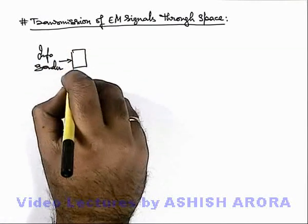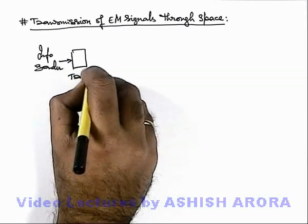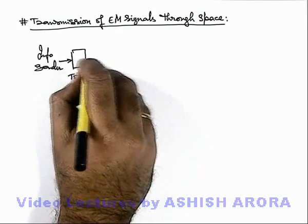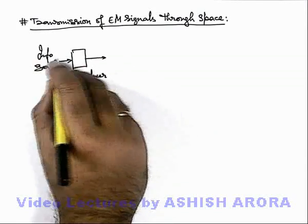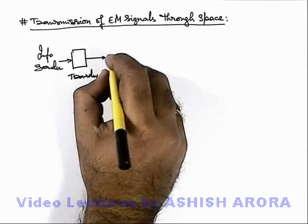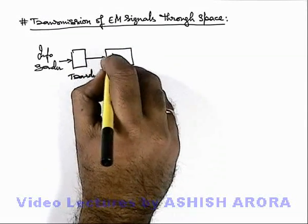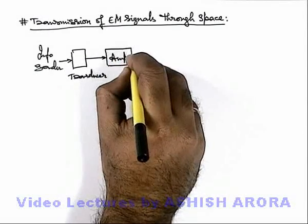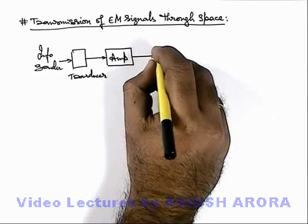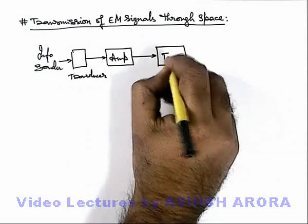in a communication system, from the information sender, the information is fed to a transducer which converts the information into electrical form. Then from the transducer it is supplied to an amplifier which increases the intensity of the signal, and then it is supplied to a transmitter.